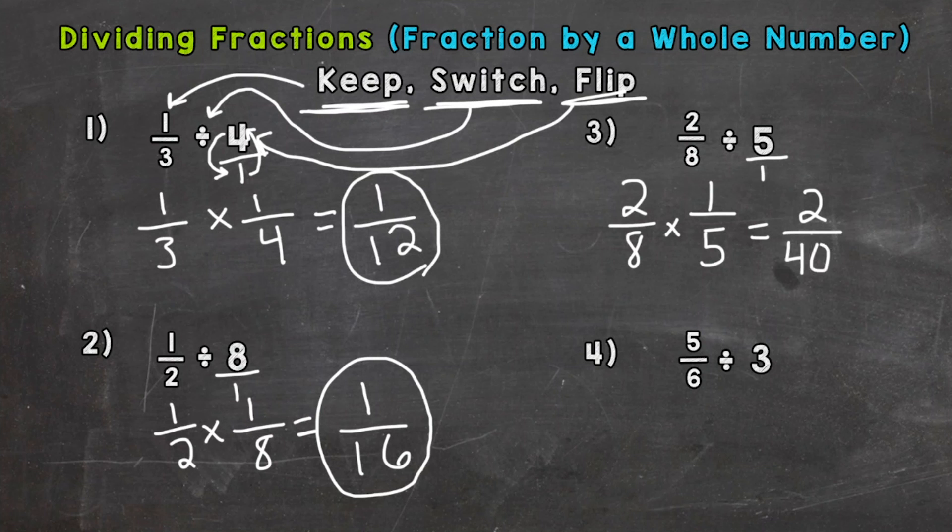Now here we have two-fortieths, and the greatest common factor is two between two and forty. We can divide both two and forty by two to break down or simplify this fraction. So let's divide both by two, and we end up with two divided by two is one, and forty divided by two is twenty. So we get one-twentieth as our simplified correct answer there.